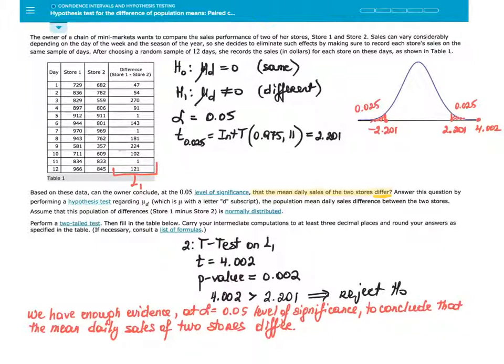Assume that this population of differences, store 1 minus store 2, is normally distributed. Perform a two-tail test, then fill in the table below. Carry your intermediate computations to at least three decimal places and round your answers as specified in the table.